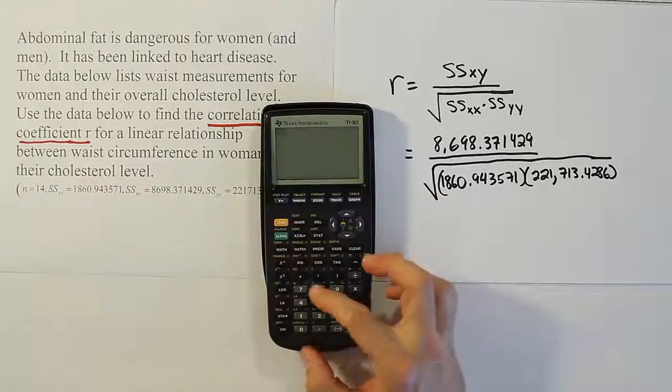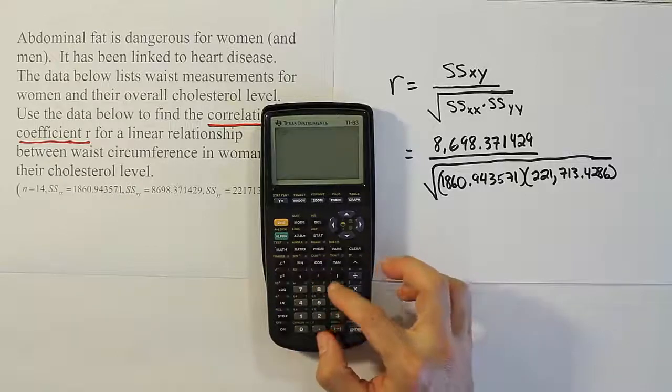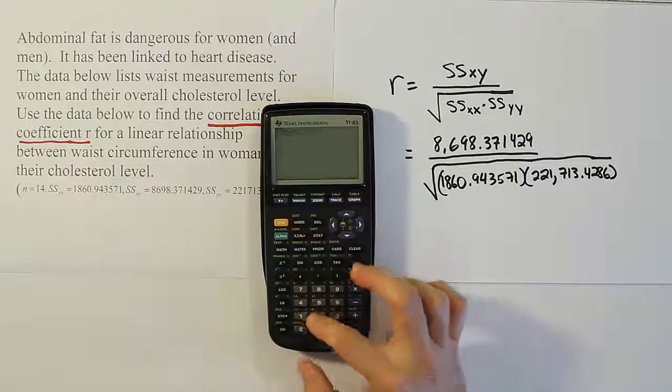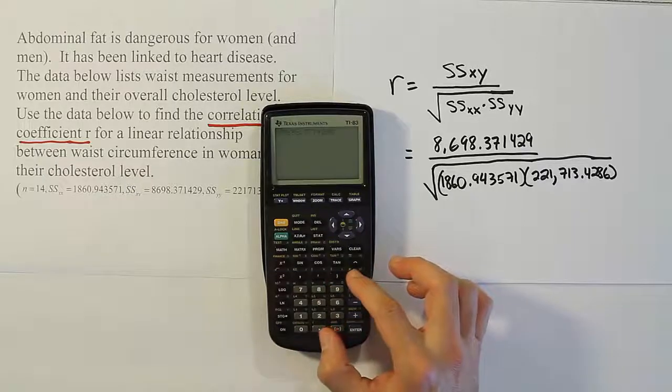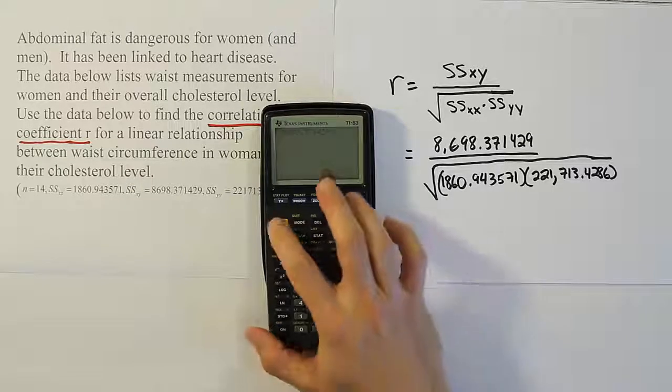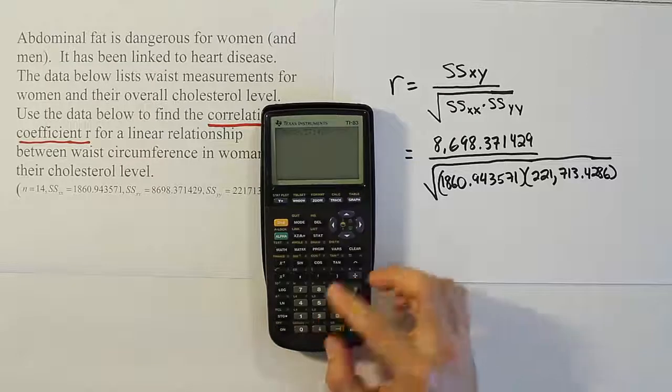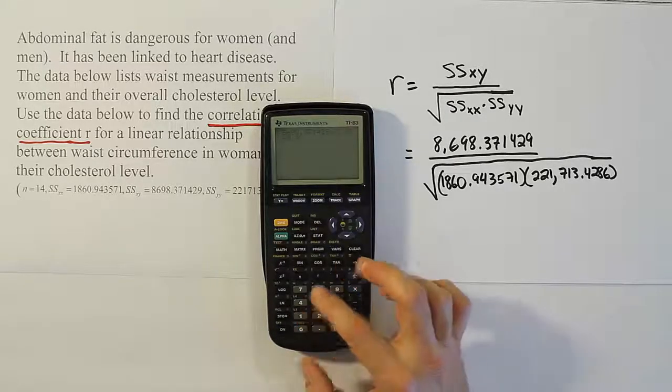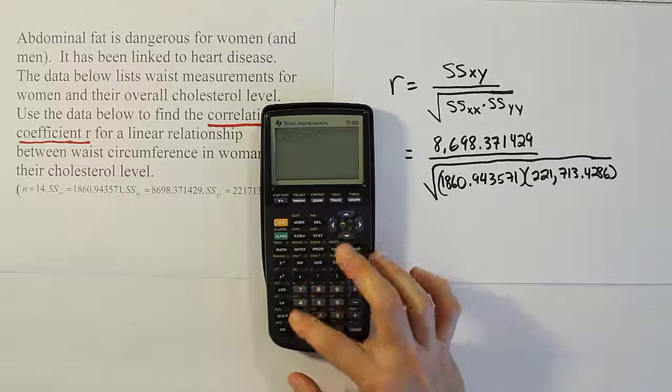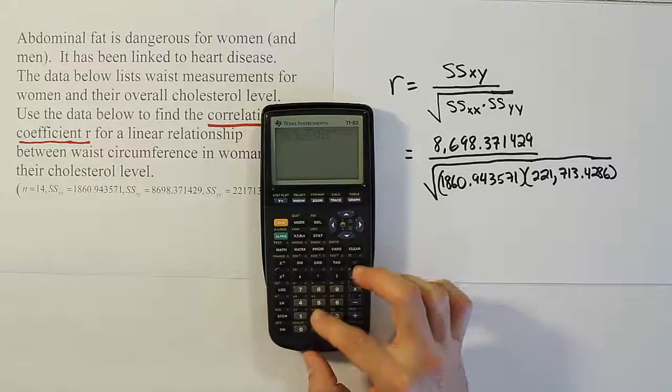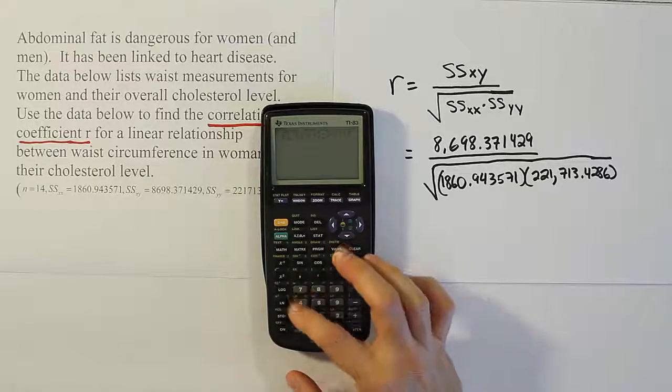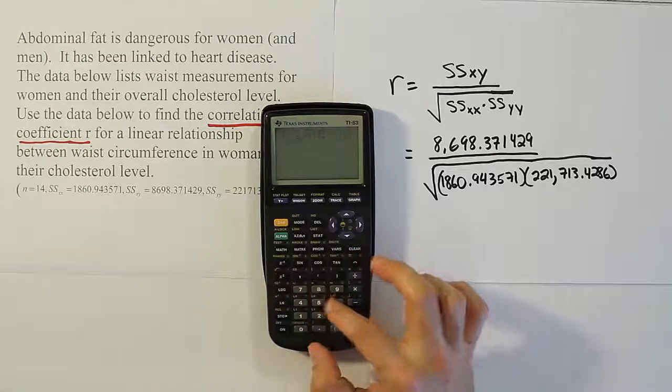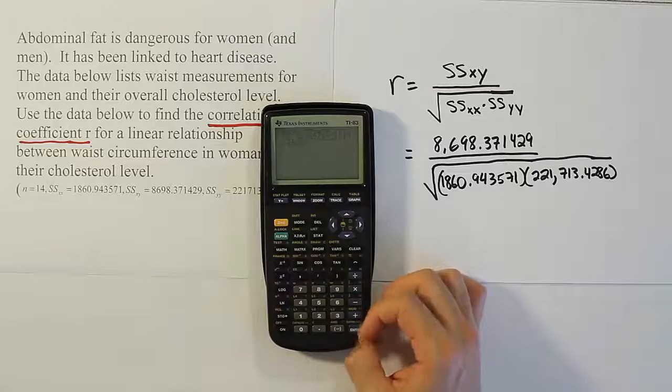So 8,698.371429 divided by the square root of the product of 1860.943571 and 221,713.4286. Close up your parenthesis, hit enter.